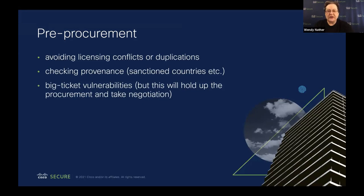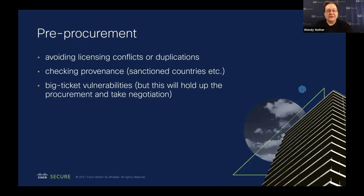There's going to be negotiation. You're going to go back to the vendor and say there's this vulnerability associated with your SBOM, and they'll say no, that doesn't really apply because of various reasons. That's where things are going to slow down in pre-procurement. I would urge you to be very careful about what you want to put here as a gate that has to do with vulnerabilities — maybe really big show-stopping ones. But if you cannot get all of your management to agree that this is a case for stopping the procurement, then you're just going to make yourself miserable going forward.